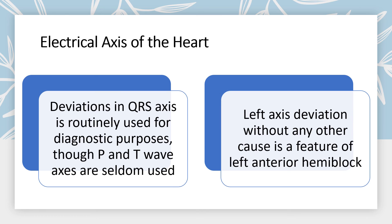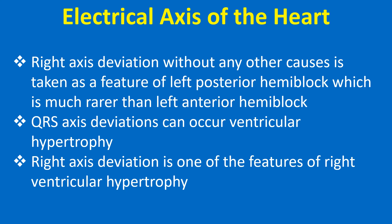Deviations in QRS axis are routinely used for diagnostic purposes, while P and T wave axis are seldom used. Left axis deviation without any other cause is a feature of left anterior hemiblock. Right axis deviation without any other cause is a feature of left posterior hemiblock, which is much rarer than left anterior hemiblock. QRS axis deviation can also occur in ventricular hypertrophy; right axis deviation is one of the features of right ventricular hypertrophy.